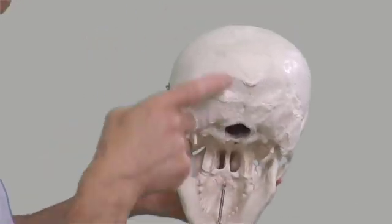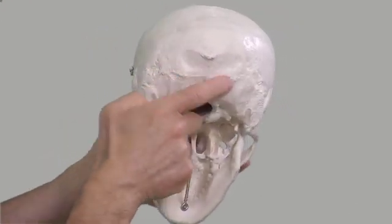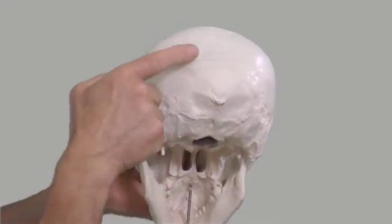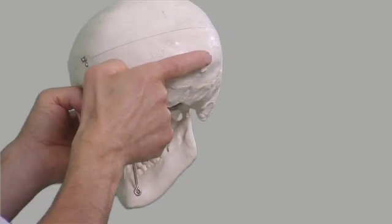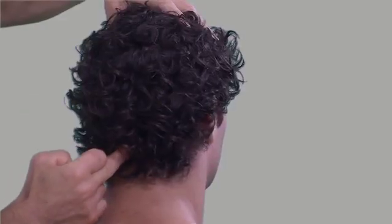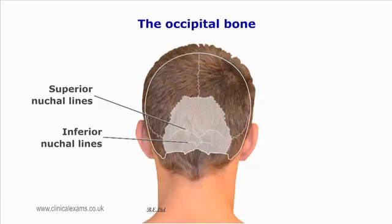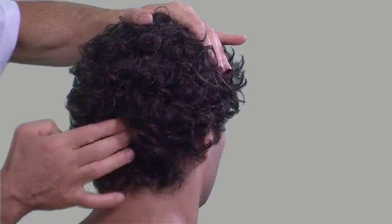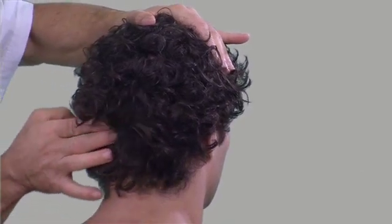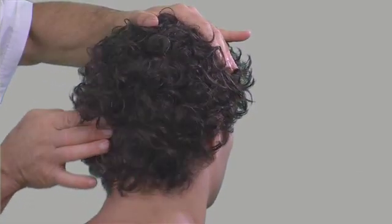Palpate the nuchal lines. Locate the occipital protuberance, a rounded elevation in the midline of the occipital bone. On either side are the superior nuchal lines, which serve for the attachment of several muscles including the sternocleidomastoid and trapezius. The inferior nuchal lines are less easy to palpate and are also an area of muscle attachments.